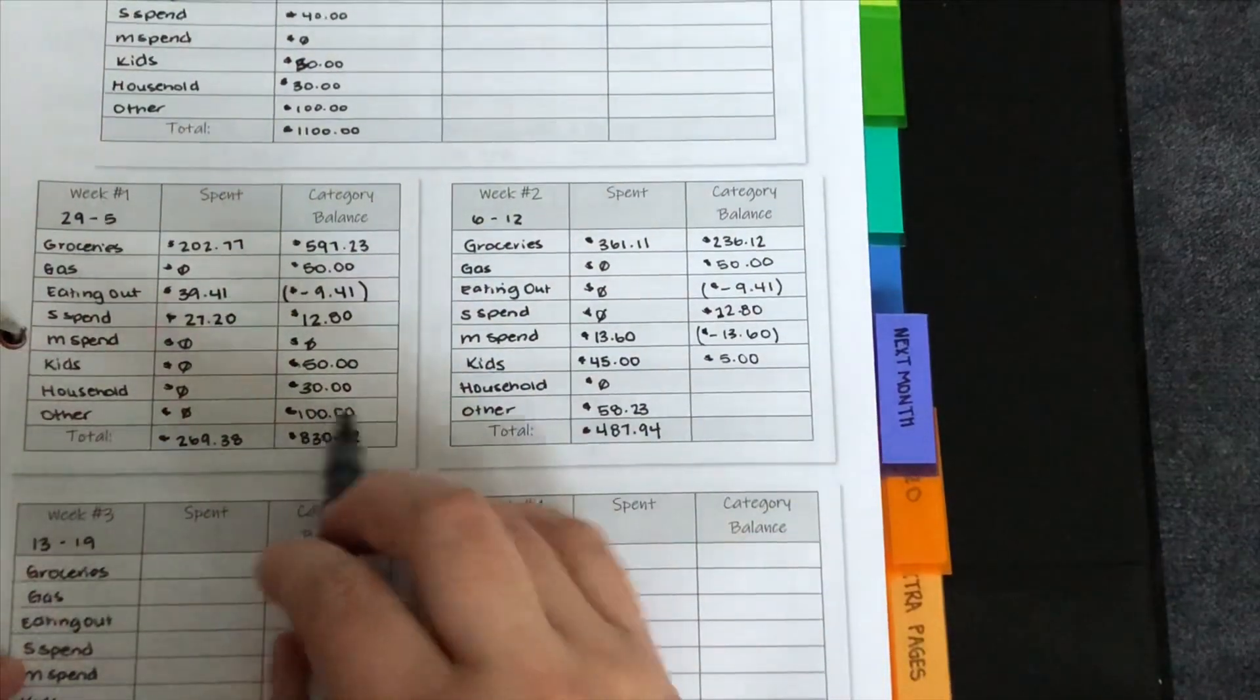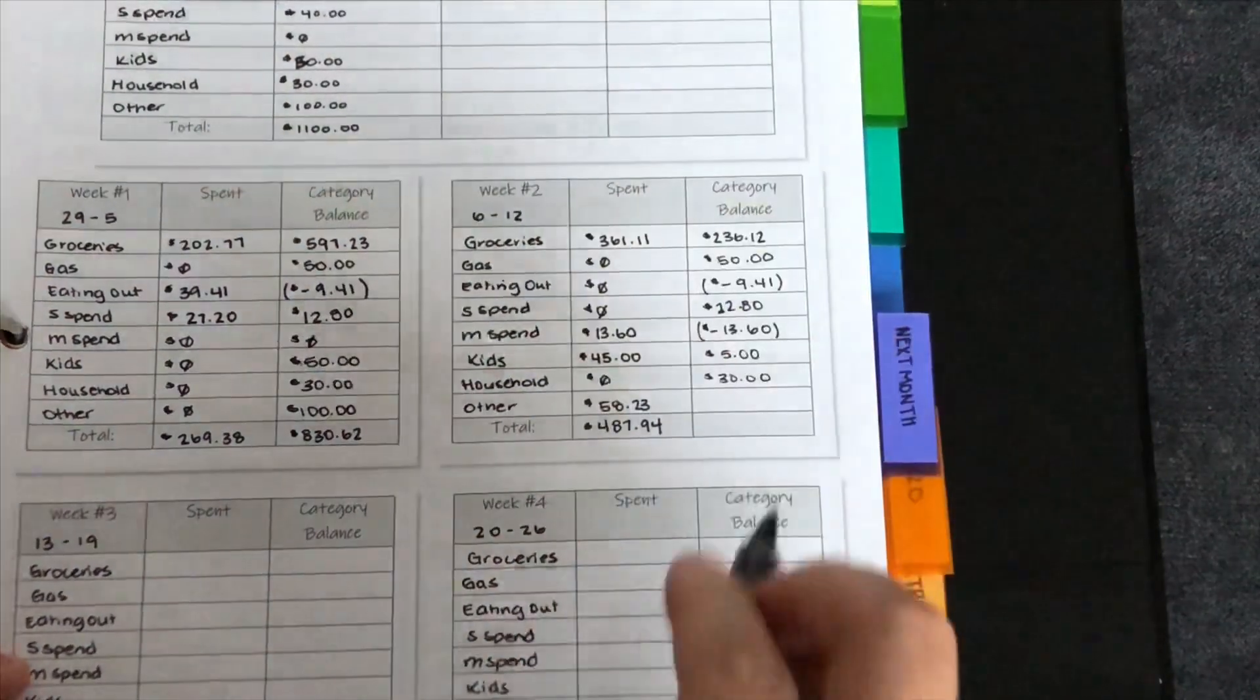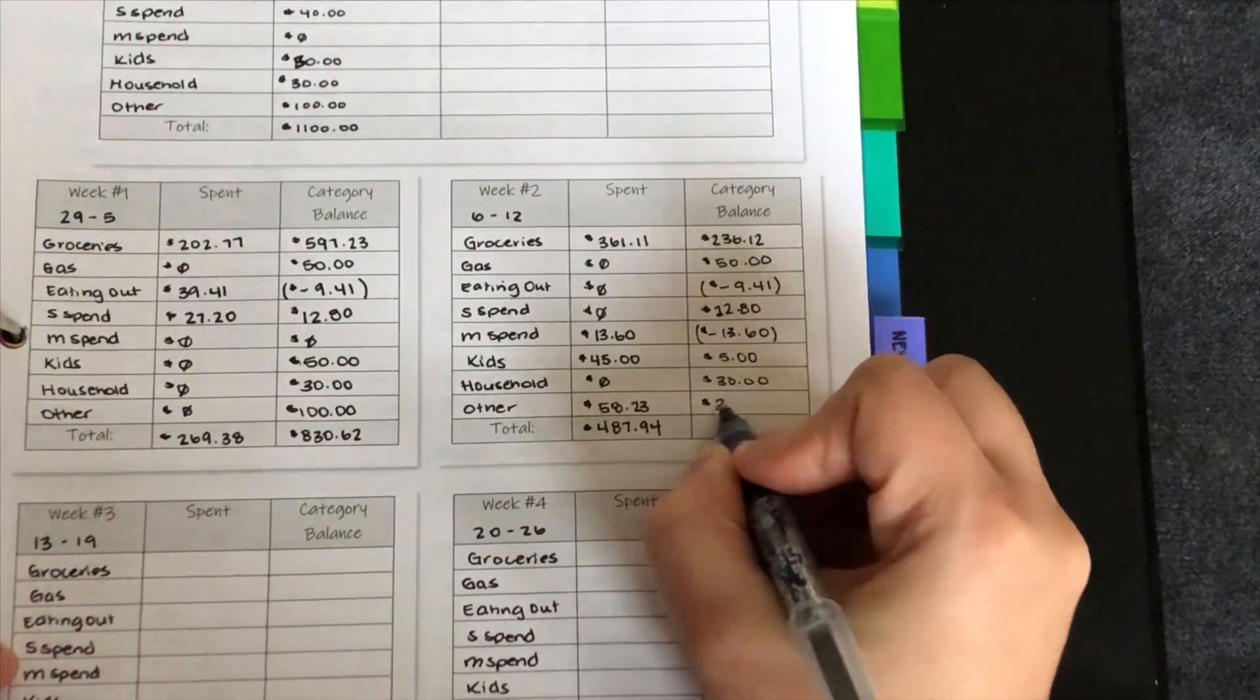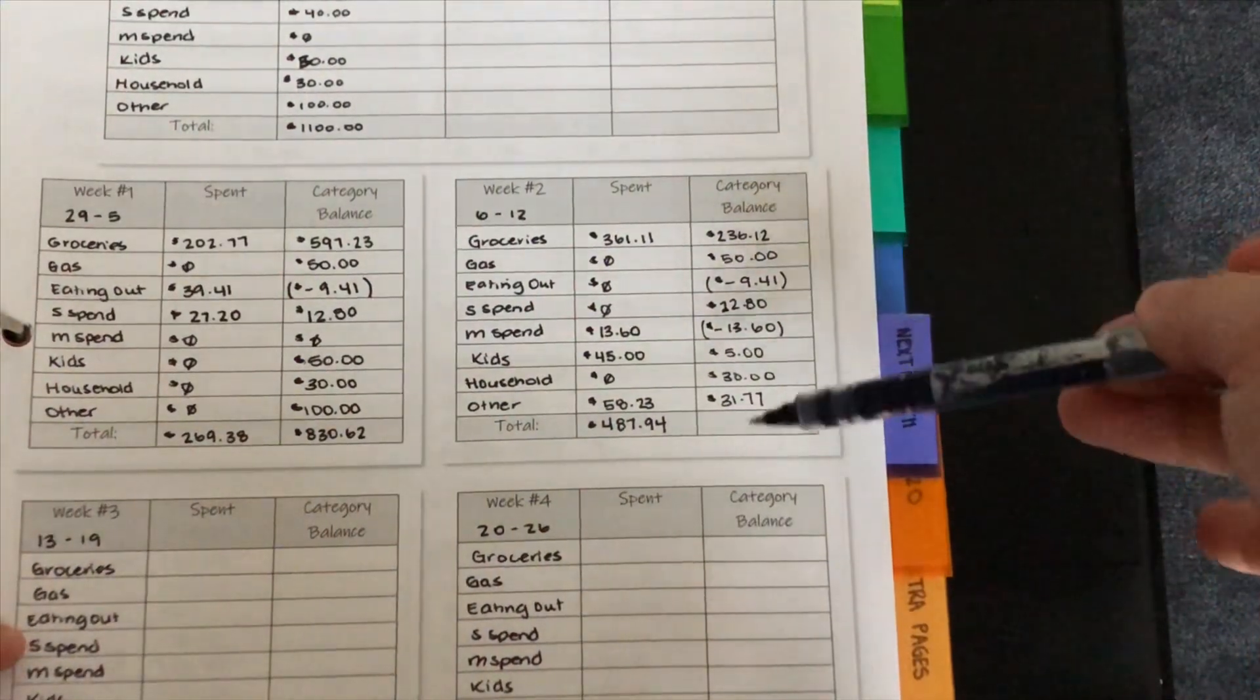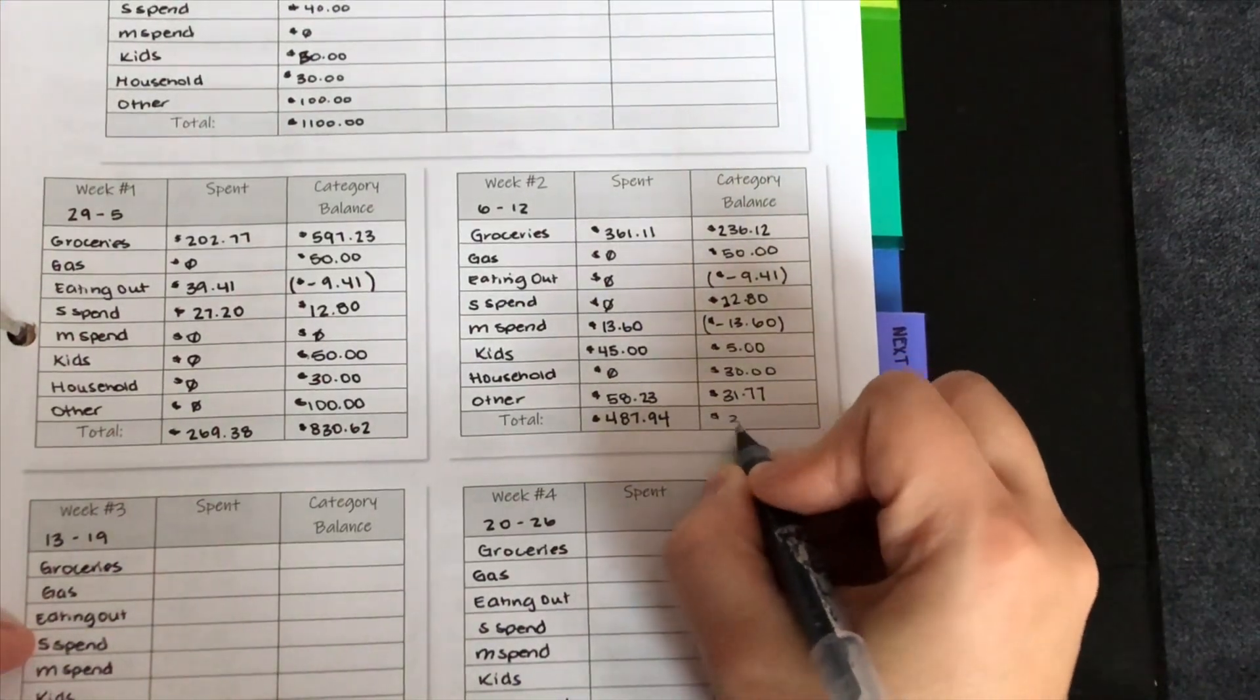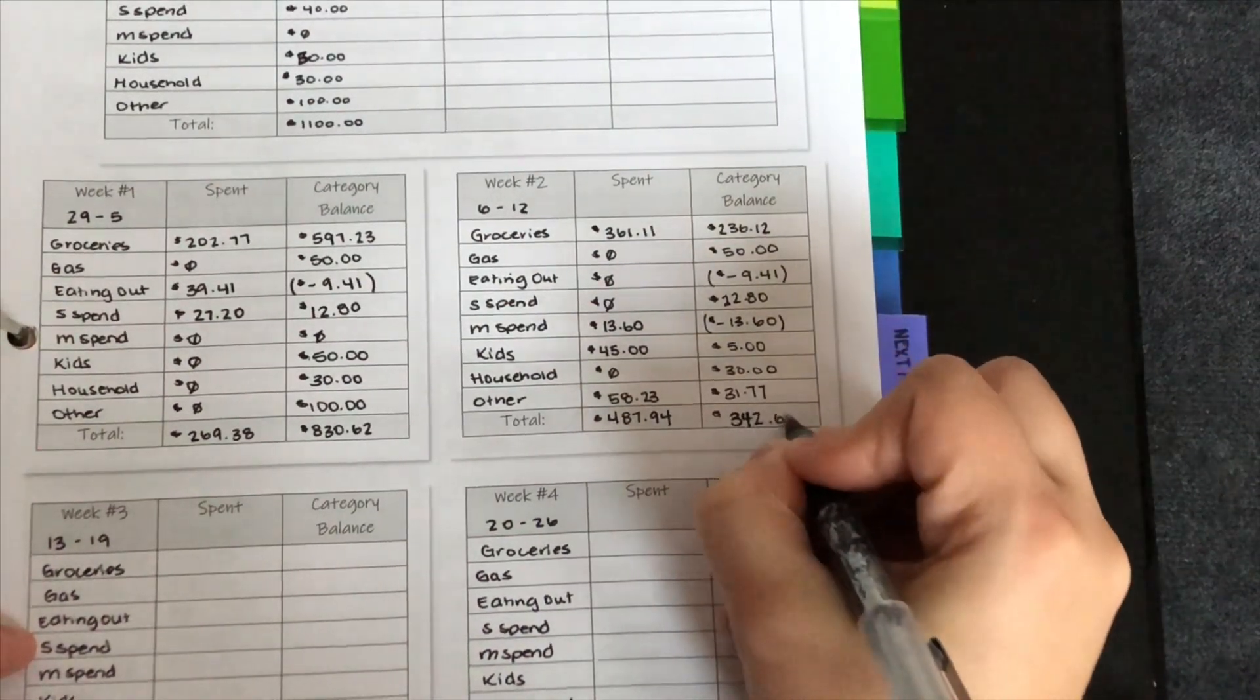We spent $0, but we had 30 in household. So we still have 30 and we had a hundred. We spent 58, 23. So we have 31 77. So what I do is I add up all of these totals and the remaining that I have for the next two weeks is $342. Oh, sorry. $342 and 68 cents,